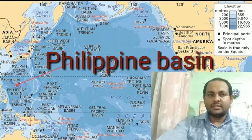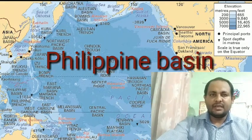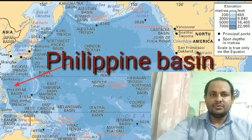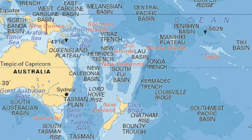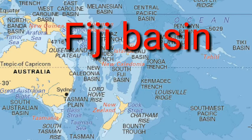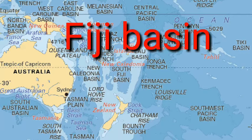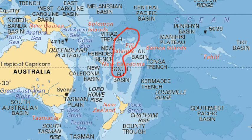The Philippines Basin extends from south of Japan to 5 degrees north latitude. The Kyushu-Palau Ridge runs through the middle of the basin. The average depth ranges from 5,000 to 6,000 meters. Next is the Fiji Basin, which is located to the south of the Fiji Islands, between 10 degrees south and 32 degrees south latitude.